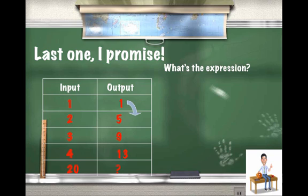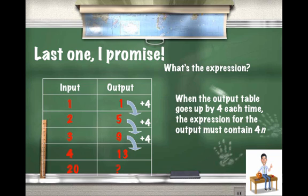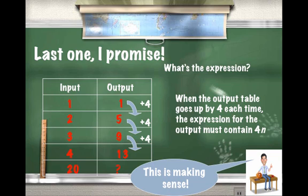Well, the output is always going up by what? By 4. We add another 4 each time to the output number. So, this will indicate that within the expression, there's going to be... Each input number is multiplied by 4, which will give us 4n, going through the same... Oh, thank you, MiniMe, this is making sense.